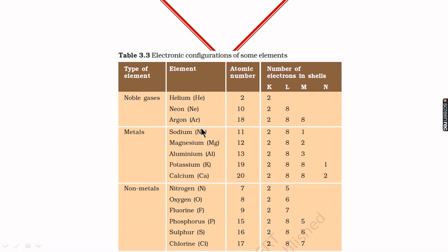Metals have either one, two, or three valence electrons and are unstable. Similarly, nonmetals have five, six, or seven valence electrons and are also not satisfying the octet rule. So we see that neither metals nor nonmetals are stable.